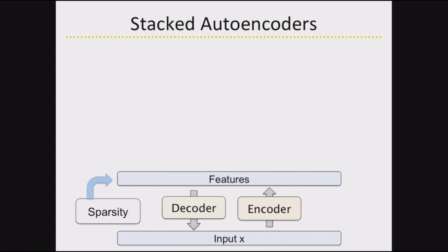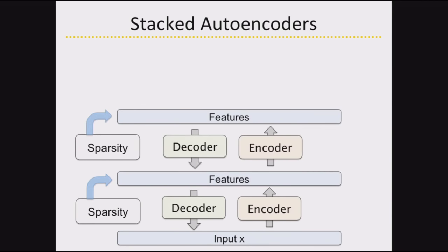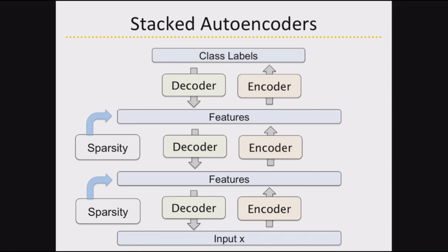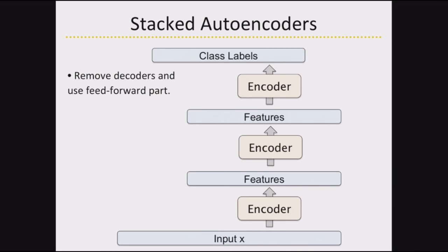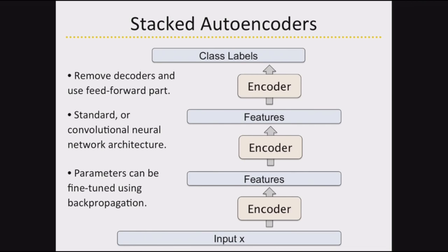What we've been doing in the last 7 to 10 years is stacking these things together: learn low-level features, then high-level features, building these blocks. At the top level, if you're trying to solve a classification problem, you can do that. This is sometimes known as greedy layer-wise learning, and it's useful whenever you have lots of unlabeled data and only a little labeled data. These models help find meaningful representations so that you don't need a lot of labeled data to solve the task. You can remove the decoding part and end up with a standard convolutional architecture.